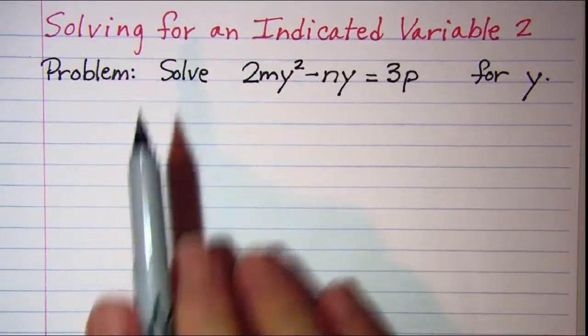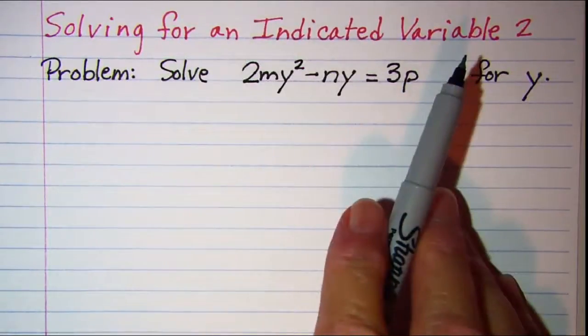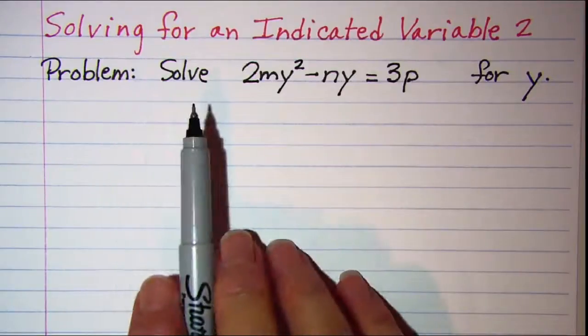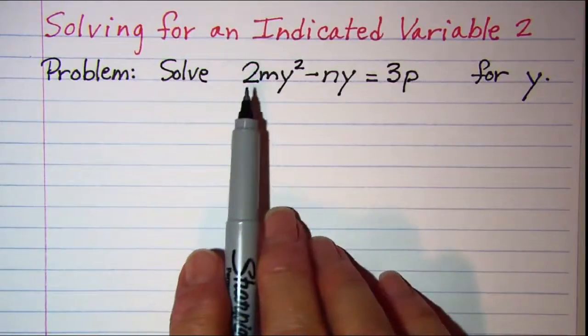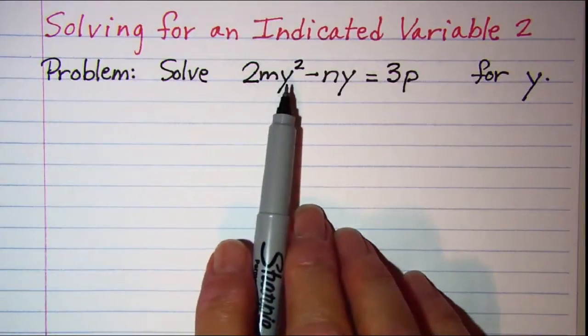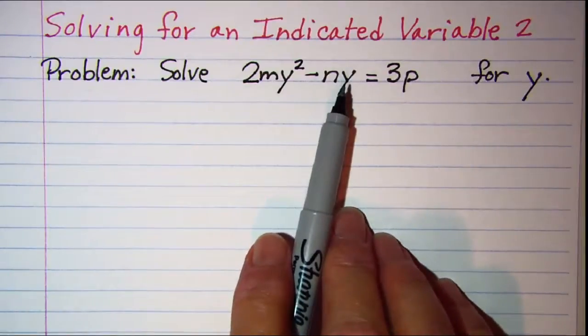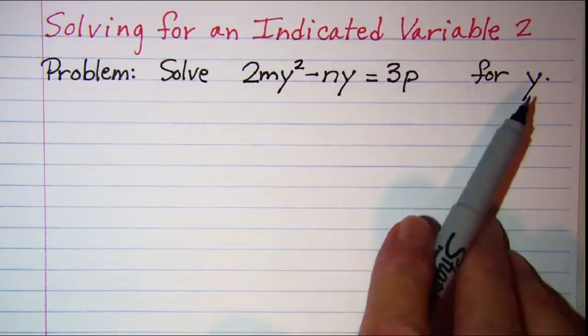In this video we'll be solving for an indicated variable. The problem that we'll be working with is to solve 2my squared minus ny equals 3p for y.